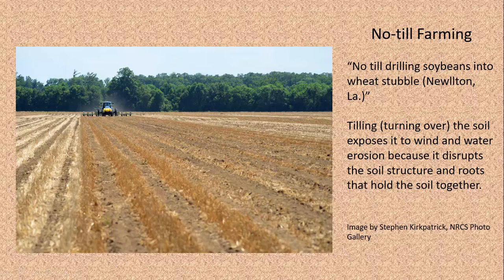No-till farming is very important in order to conserve our soils. Tilling is whenever you turn over the soil, which exposes it to wind and water erosion and disrupts the soil structure, digging up the roots that were helping to hold the soil together. So tilling in general is not great for soil health. In this case, this machine is actually drilling soybeans into the ground rather than tilling up the soil — it's just putting them into the ground — and there's wheat stubble still on the ground from the previous crop.